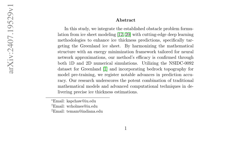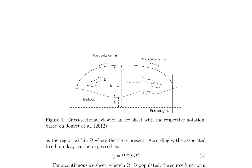The relationship between h and b implies the existence of a free boundary, defined as omega plus equals h greater than b, equals h greater than zero, which separates the region where ice is present from the region where it is not. The associated free boundary is expressed as gamma f equals omega intersection partial differential omega plus. The source function a, which denotes ice accumulation, is positive within omega plus, while it is negative outside omega plus, indicating ablation.